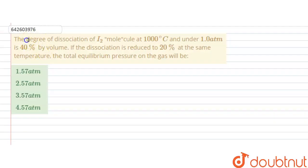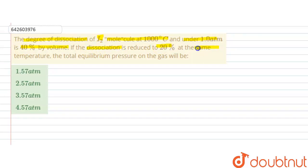The question is: the degree of dissociation of I₂ molecule at 1000°C and under one atmospheric pressure is 40% by volume. If the dissociation is reduced to 20% at the same temperature, the total equilibrium pressure on the gas will be?